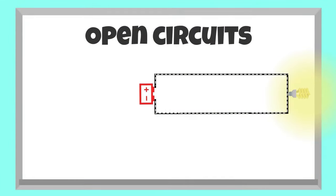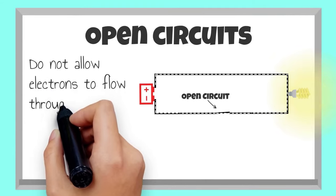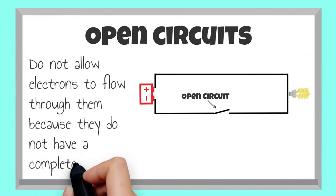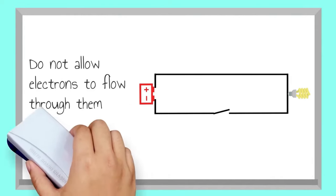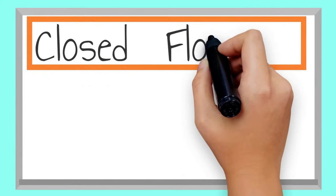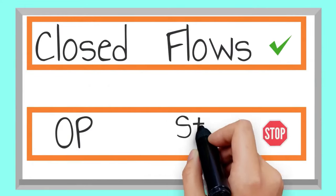Open circuits do not allow electrons to flow through them because they do not have a complete path. An easy way to remember open and closed circuits is by using the rhyme: closed flows and op stops.